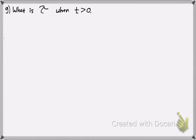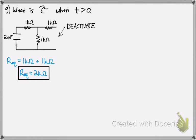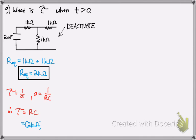Next, we're going to find tau — the time constant for T greater than zero. What you do is take the circuit, deactivate the source on the right, and find the equivalent resistance. Since that section is deactivated, the one kΩ resistor on the upper right is effectively pointless — current only flows on the left loop. You sum the remaining resistors, which are one and one, giving a total equivalent resistance of two kΩ. Tau is R times C, where A is defined as one over RC. So with R equivalent of 2 kΩ and capacitance of 2 µF, two times two is four — and watch your units: kΩ times µF gives milliseconds. That's how you find the time constant.